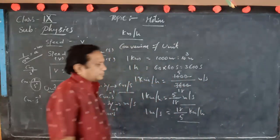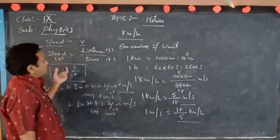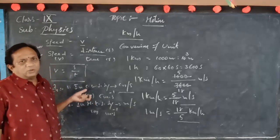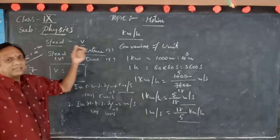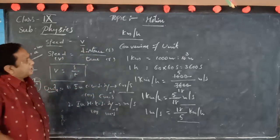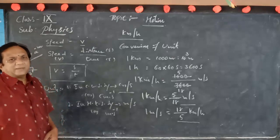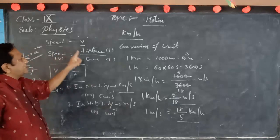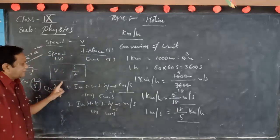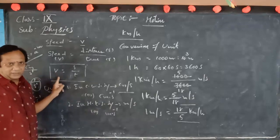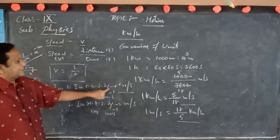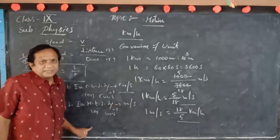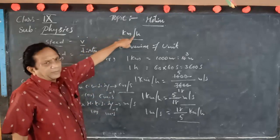Speed is a scalar quantity because it has no direction — only magnitude. Distance divided by time is called speed, denoted by V, given by the formula V equals s by t. Its unit in the CGS system is centimetres per second, and in the MKS system it is metres per second. It is also measured in kilometres per hour.